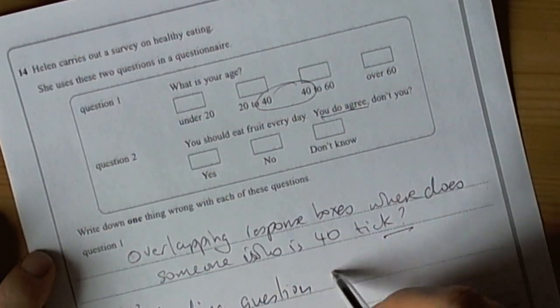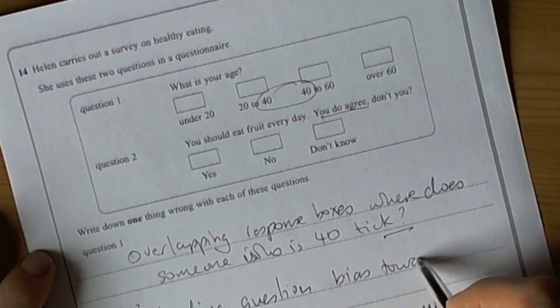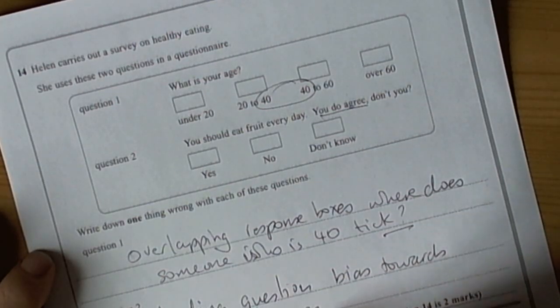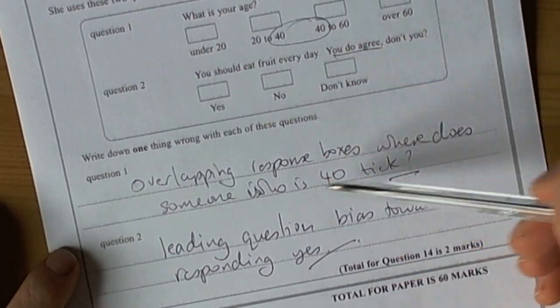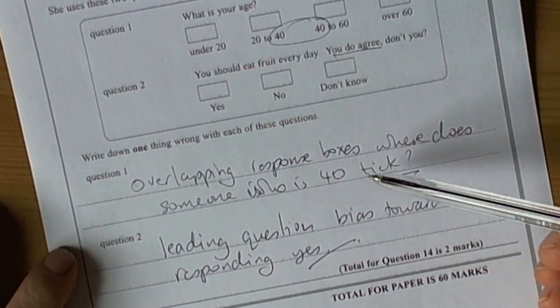So, it's a leading question. It's biased towards responding yes. So, that's a quick summary of the kind of questions you get to do with sampling and questionnaires.